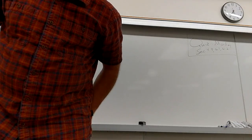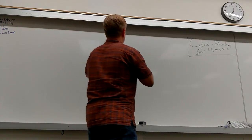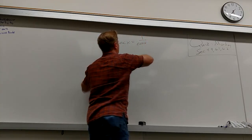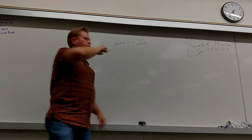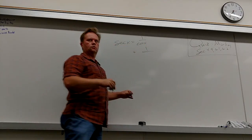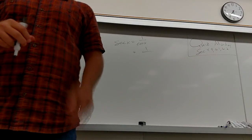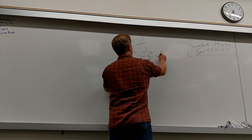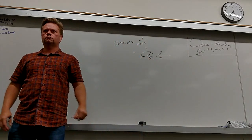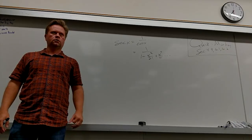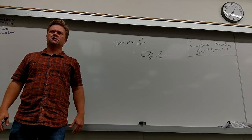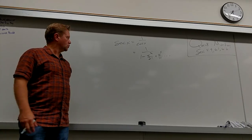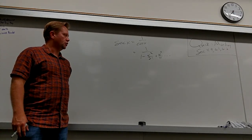So you could do secant x as 1 over cosine, and cosine itself is 1 minus x squared over 2 factorial. It's hard to do long division on something that's already fractional — there's nothing to really divide into.